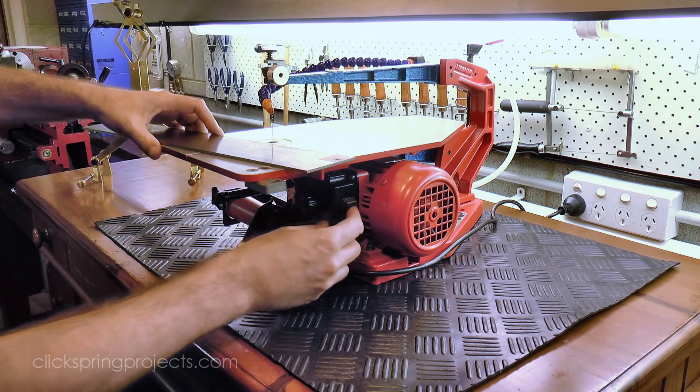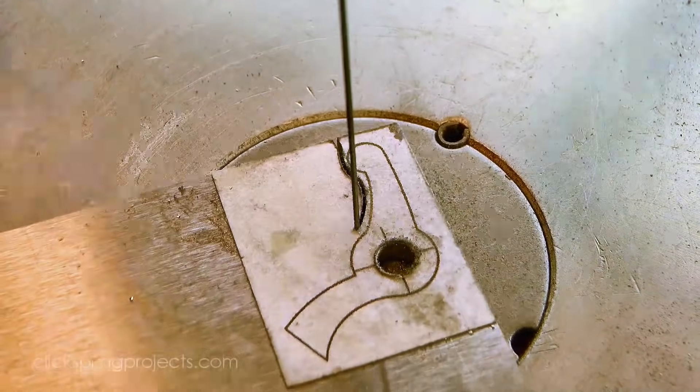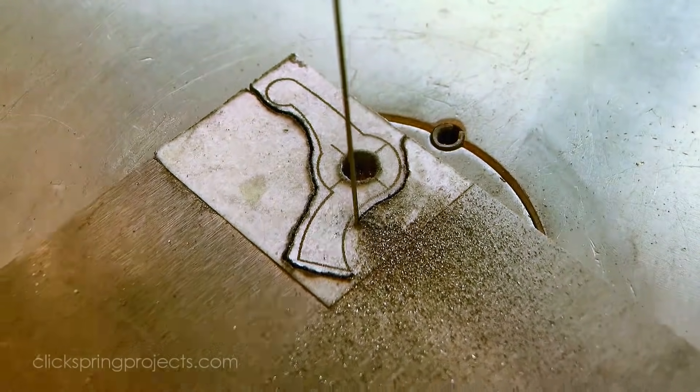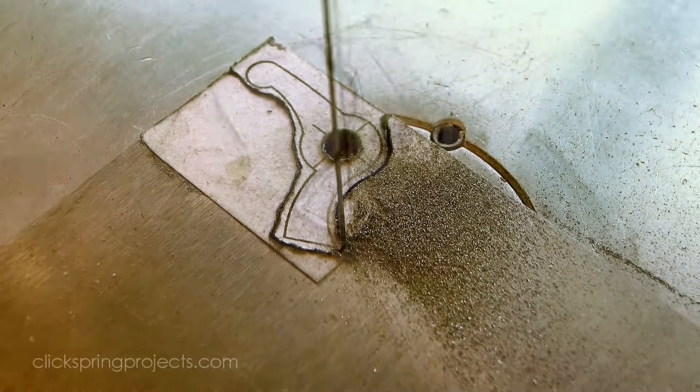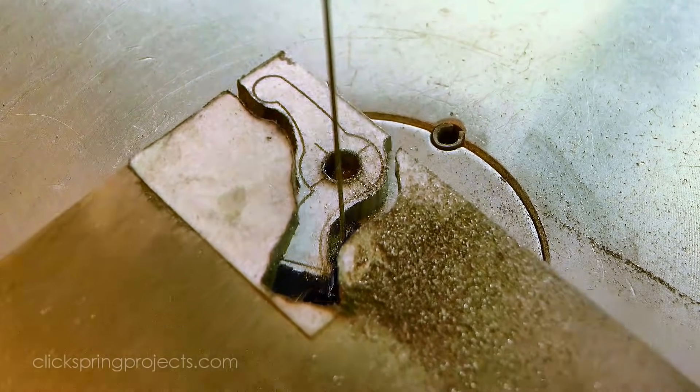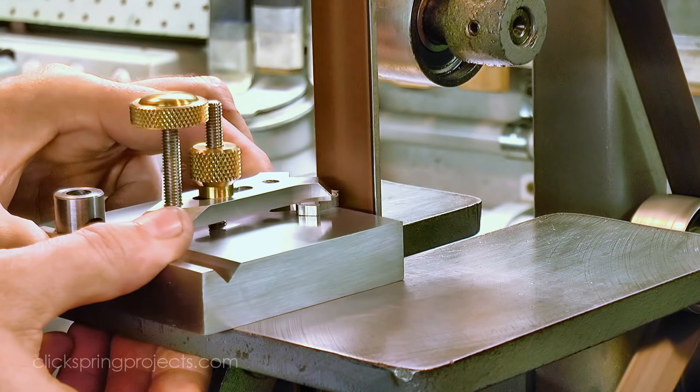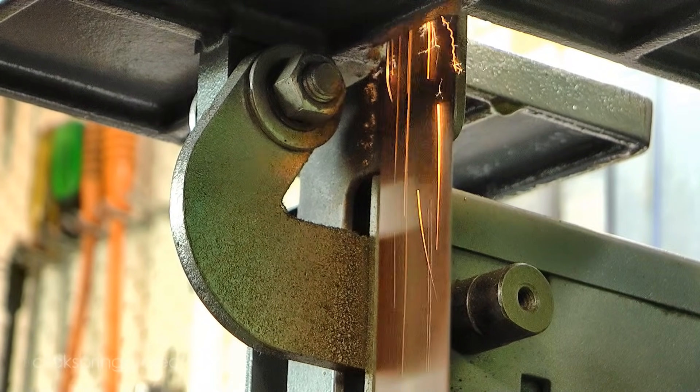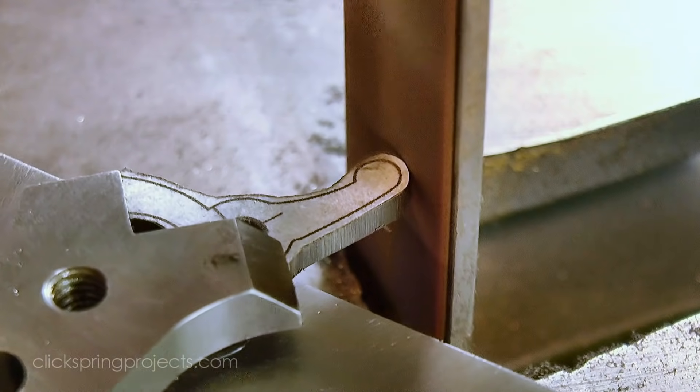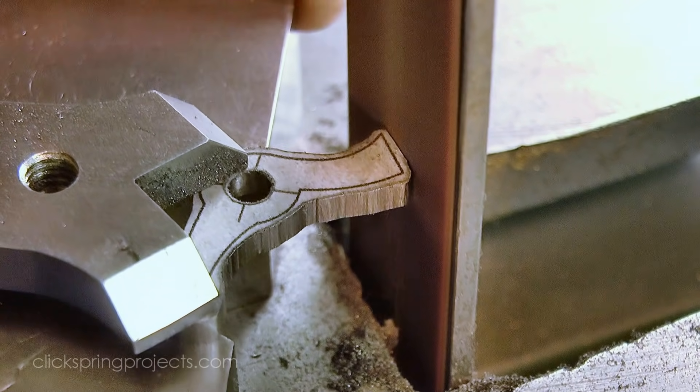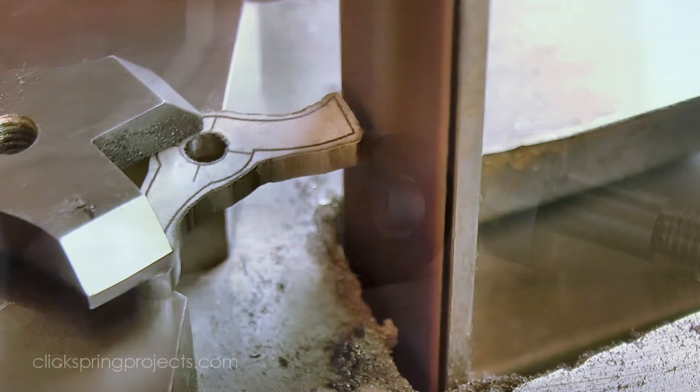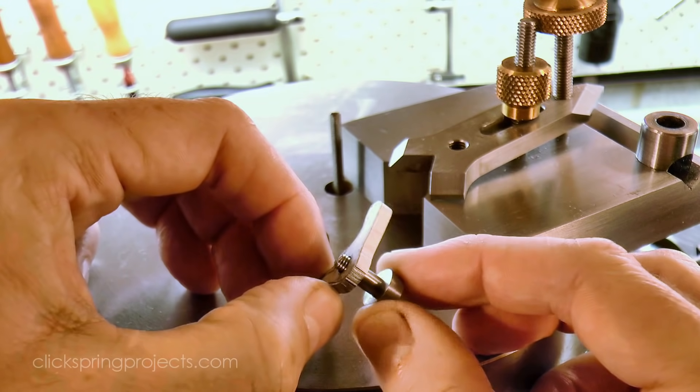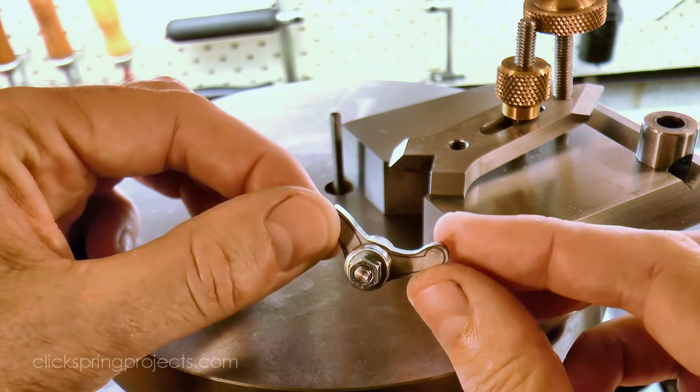The part was then roughed out using the scroll saw and then brought closer to the line with the belt sander. And at this point I'm still leaving about a half a millimetre on the work to allow for filing. And speaking of filing, that circular part in the centre really does need to be spot on. So off camera I turned up a simple filing button to help me get a good result. It fits firmly in the central bore, and I'll keep it on the part until I've completed the final shaping.